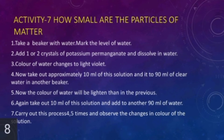Activity 7: How small are the particles of matter? Take a beaker with water, mark the level of water, and add one or two crystals of potassium permanganate and dissolve it in water. The color of water changes to light violet. Now take out approximately 10 ml of this solution and add it to 90 ml of clear water in another beaker. The color of water will be lighter than in the previous beaker. Again, take out 10 ml of this solution and add it to another 90 ml of water. Carry out this process 4 to 5 times and observe the changes in color of the solution.